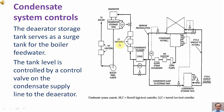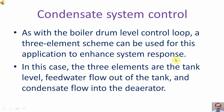The deaerator storage tank serves as a surge tank for the boiler feed water. The tank level is controlled by a control valve on the condensate supply line to the deaerator. As with the boiler drum level control loop, a three-element scheme can be used for this application to enhance system response.